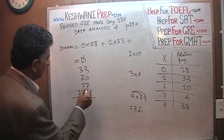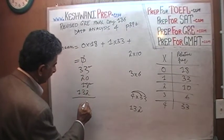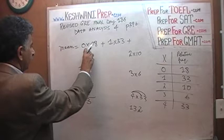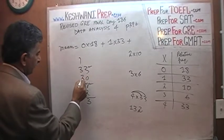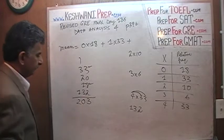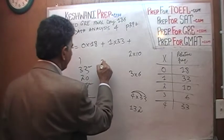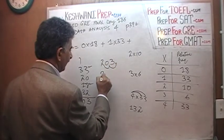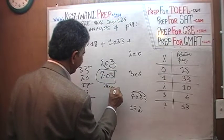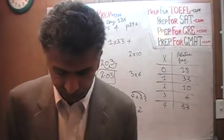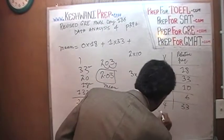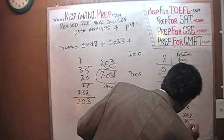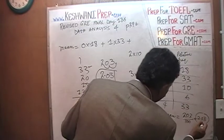We just have to add them all up: 0 plus 33 plus 20 plus 18 plus 132. That gives us 203. Now move the decimal places back two places and the answer is 2.03. That's the mean — 2.03.